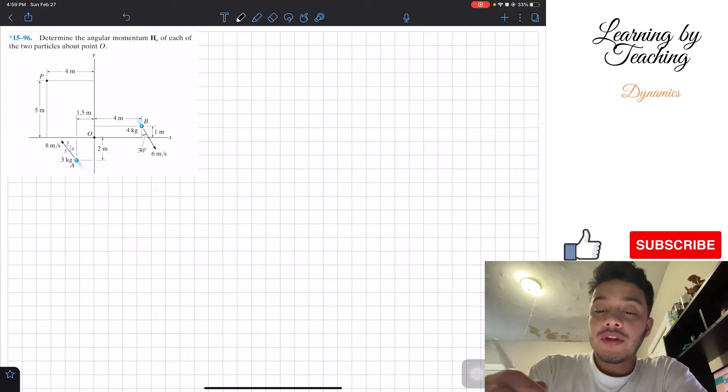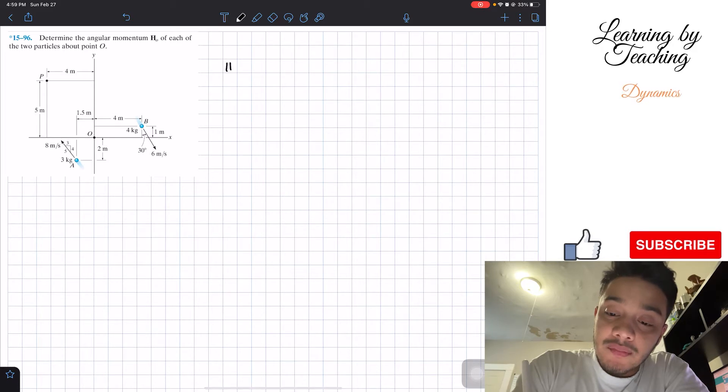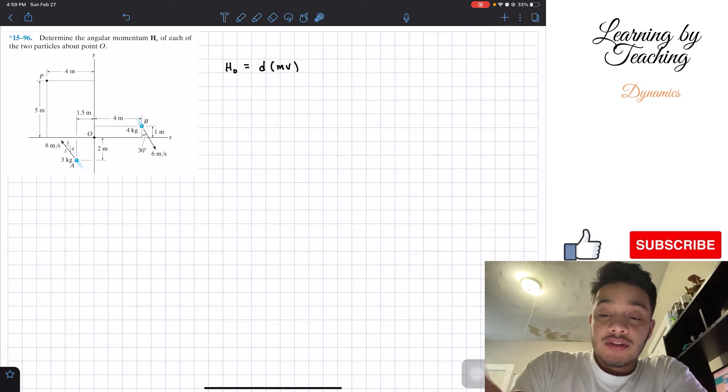So the only thing that we need to know in order to solve this problem is that angular momentum H is equal to the distance r multiplied by the mass times the velocity. This is very similar to finding the moment when we're doing a statics problem, when we have the distance r multiplied by the force.